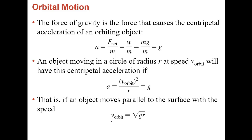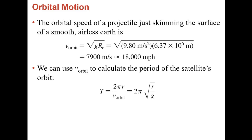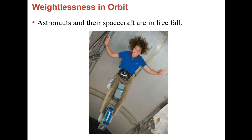Folks who put satellites into orbit figure this out relatively simply. They know their orbit, and they know the gravitational acceleration at that altitude — because as you go up, gravitational acceleration decreases due to increased distance in the gravitational field. If we placed an object just over the surface of a smooth, airless Earth, the orbital speed would be the square root of g times the radius of the Earth, which would be about 18,000 miles per hour. We could then use that speed to figure out the orbital period.